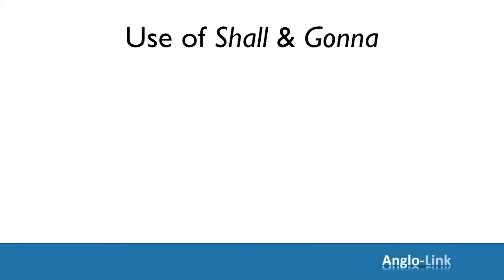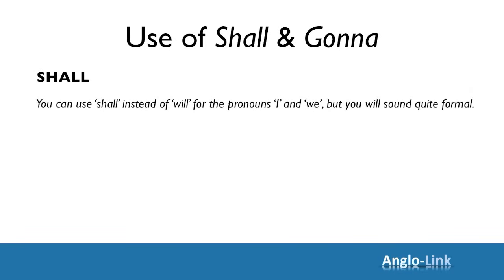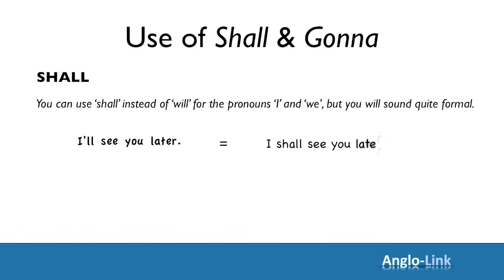Before we move on, I'd like to point out two words you'll come across quite often. One is shall and the other is gonna. Shall is a very formal word when used for the future tense — it goes with the pronouns I and we. If you use it, you'll sound quite formal. So instead of: I'll see you later, you can say: I shall see you later. Or instead of: We'll discuss this tomorrow, you could say: We shall discuss this tomorrow.